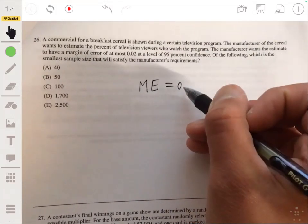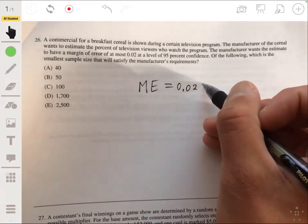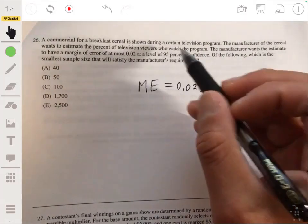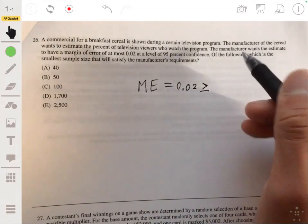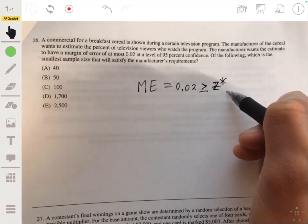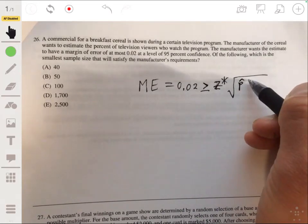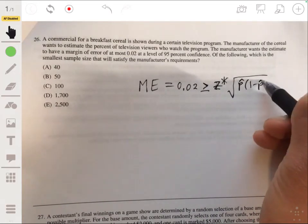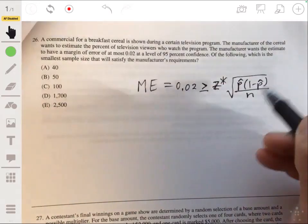your margin of error is set at 0.02, or more specifically, you want 0.02 to be more than or equal to the value of the critical value, in this case z star, times the standard deviation. In this case will be p hat, because we're talking about percent or proportion. So we're essentially solving this for n.